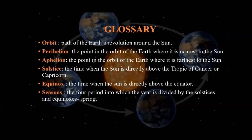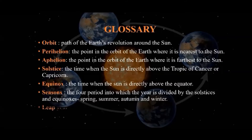There are four main seasons: spring, summer, autumn, and winter. Leap year — a year which has 366 days is known as a leap year.